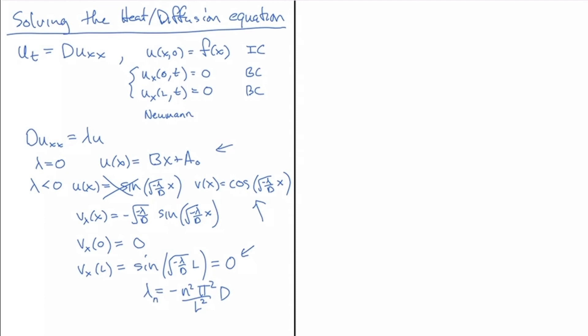So, let's see if that straight line can satisfy the boundary conditions. Well, you'll notice that a general bx plus a_naught, it's not going to have, it's going to have slope of b at the endpoints, and we want a slope of zero at the endpoints. So, clearly, b has to be zero.